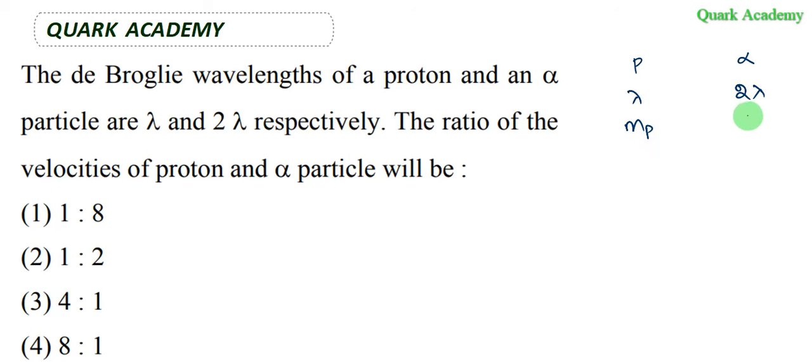The mass of an alpha particle is four times the mass of a proton, so m_α = 4m_p. We need to find the ratio between the velocity of the proton and the velocity of the alpha particle.